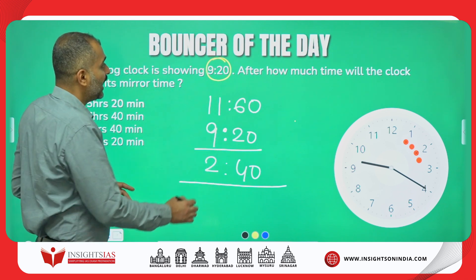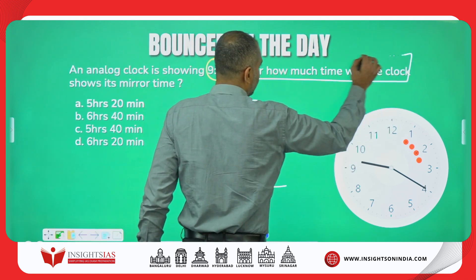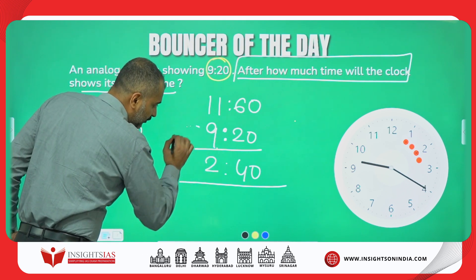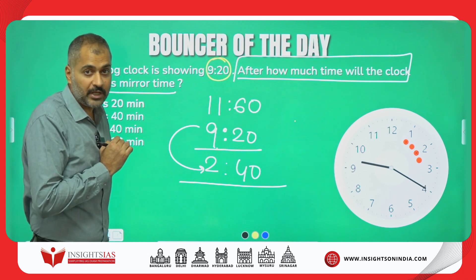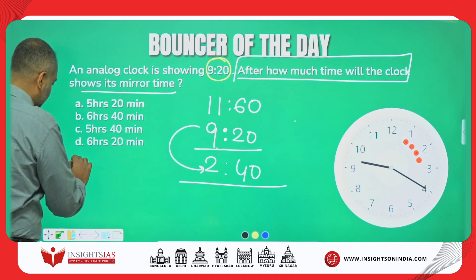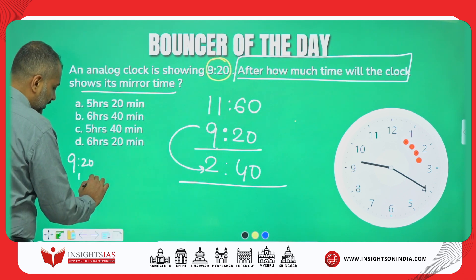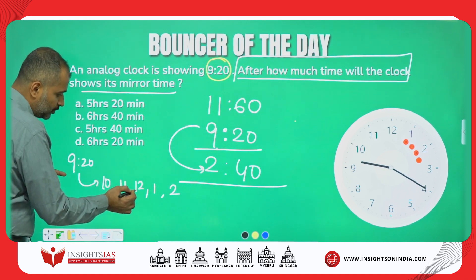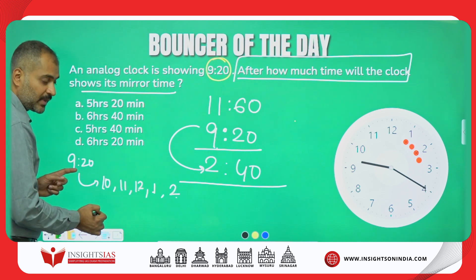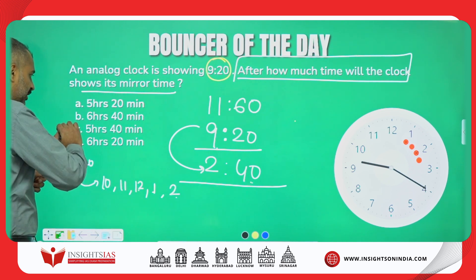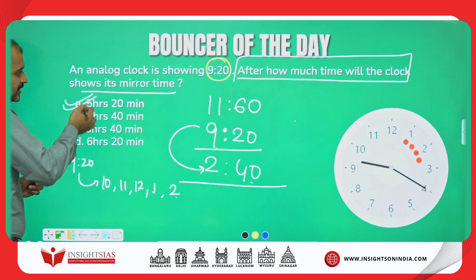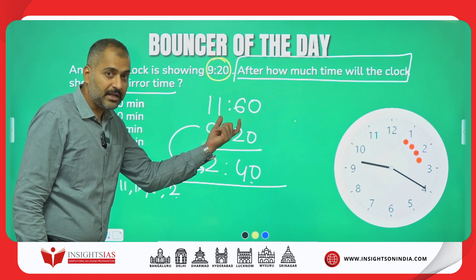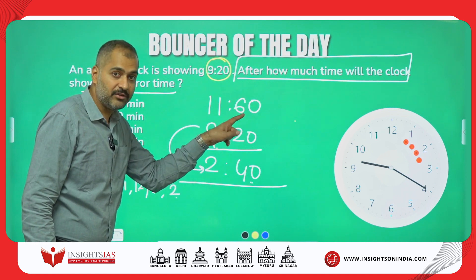But the question says after how much time will the clock show its mirror time. The time is 9:20 and it is going to become 2:40. From 9:20, counting 10, 11, 12, 1, 2 — that is totally 5 hours, and there are 20 more minutes, so 5 hours 20 minutes. After 5 hours 20 minutes, it will show its mirror time. Remember: subtract whatever the given time from 11:60.